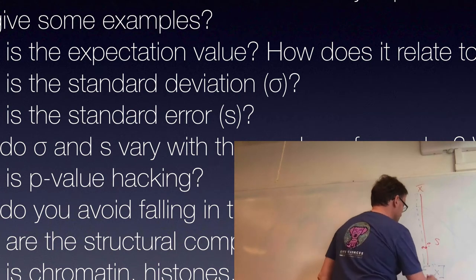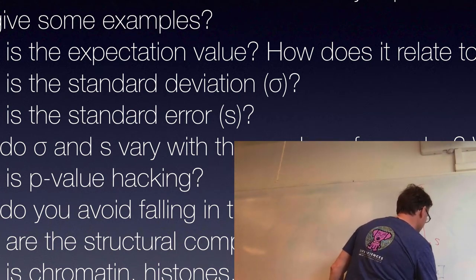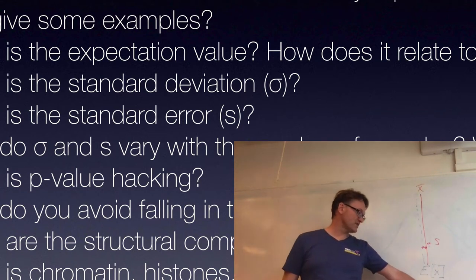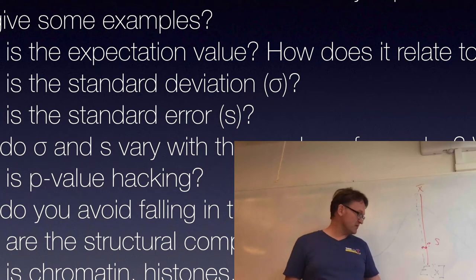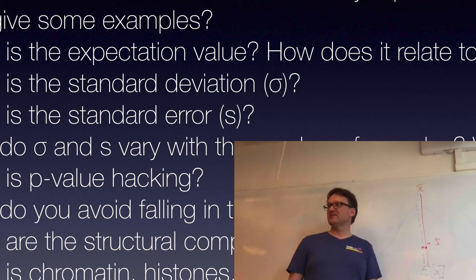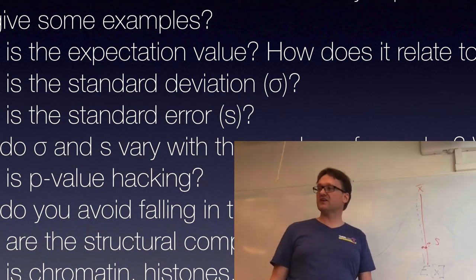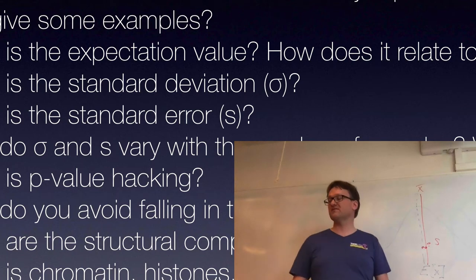If your advisor needs accuracy of one kilocalorie per mole, should you do five samples, five hundred, or five million? The standard error describes how accurate we expect the average to be as an estimator of the expectation value. For example: the average length is 4.2 plus minus 0.2 — I'm essentially saying the likelihood that it's much more than 0.2 away is small. The standard error describes how accurate we expect the average to be as an estimator of the expectation value.